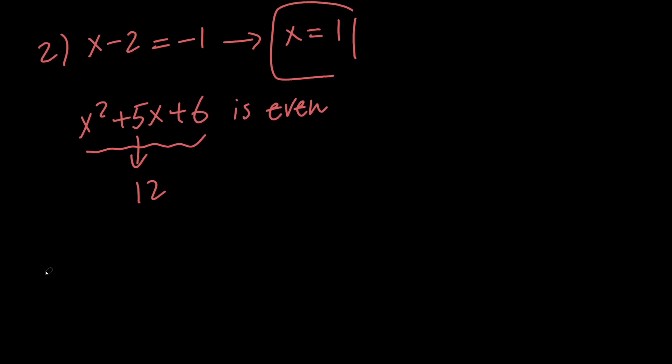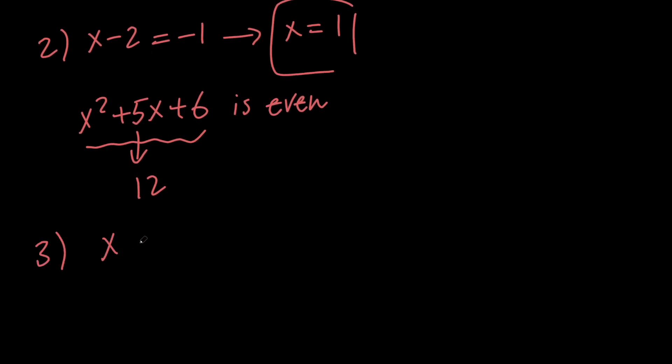In the third case we want the base to be anything other than 0. So that means that x is not equal to 2. It is forbidden for x to be 2.